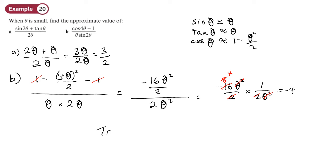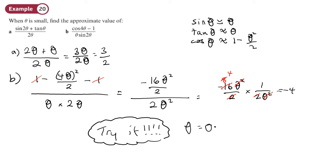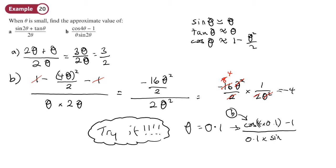You can try it for yourself on your calculator. If you pick theta as a very small value — I tried theta equals 0.1 — and put it into cos 4 times 0.1, making sure your calculator is in radians, then subtract 1, and divide by 0.1 times sine of 2 times 0.1, you get negative 3.97. That's a good approximation.